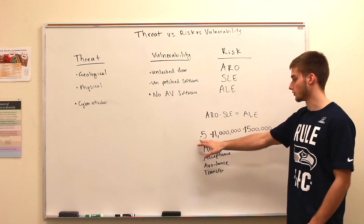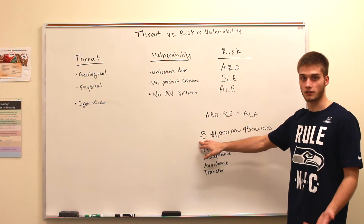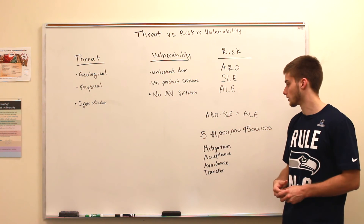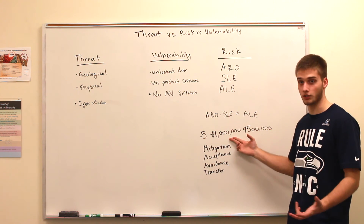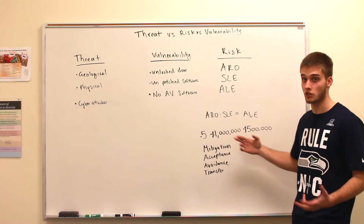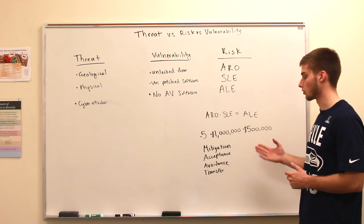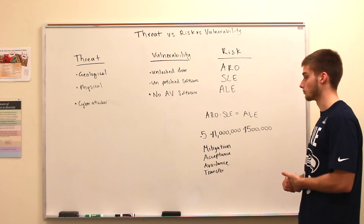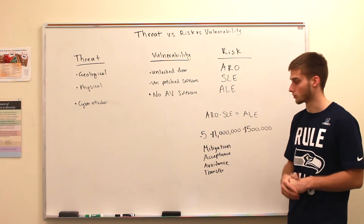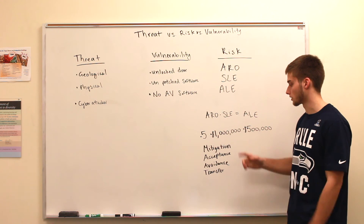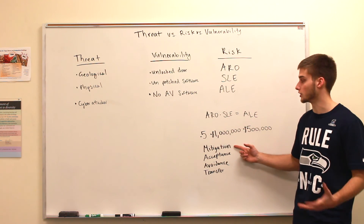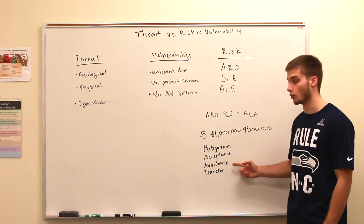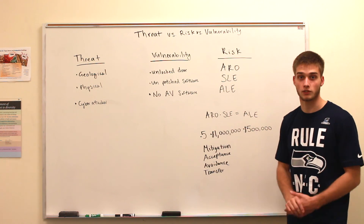For example, if there's a 50-50 chance that your building could flood this year and if it does flood it's going to cause a million dollars in damage, we want to look at budgeting for about $500,000 a year. In a later video, we'll talk more about the ability to reduce risk through mitigation, acceptance, avoidance, and risk transfer.